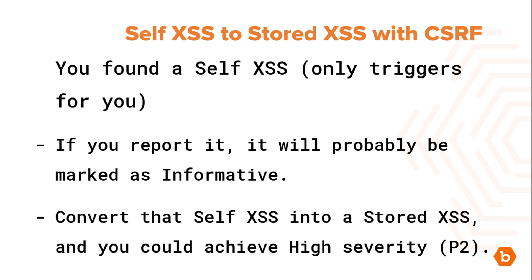The second technique: Self-XSS to stored XSS with cross-site request forgery. I learned this technique from Vicky Li in her book Bug Bounty Bootcamp — highly recommend it. Imagine you found a self-XSS in a profile field that no one else can see. Let's say it's a field called 'notes' that's visible only to you. You insert the payload there and the XSS triggers, but only for you — that's the definition of self-XSS. If you report it, it will probably be marked as informative. Convert that self-XSS into a stored XSS and you could achieve high severity — a P2.